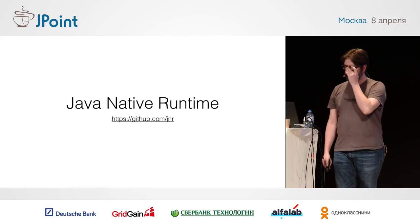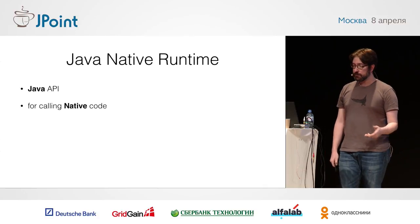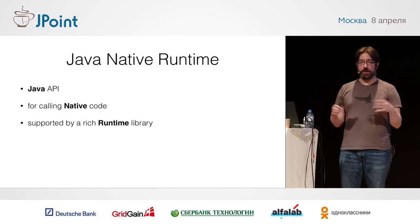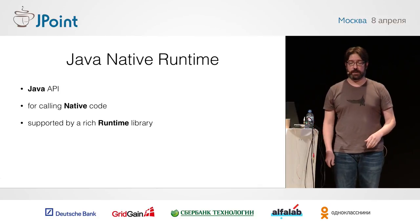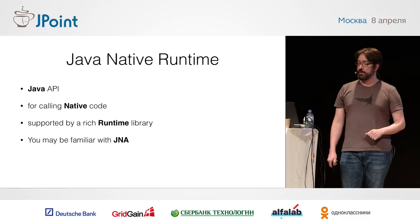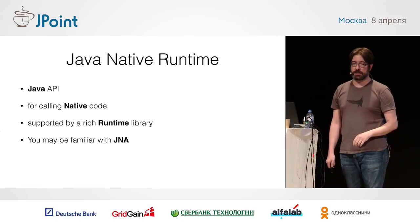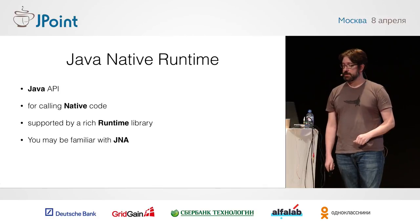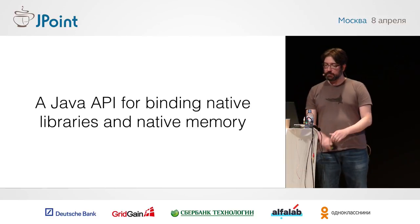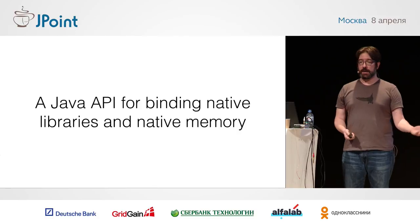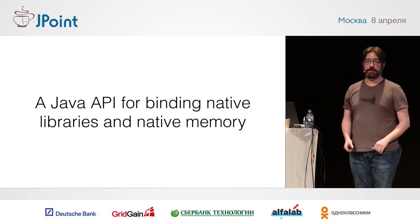The Java Native Runtime is a project we've worked on alongside JRuby to support JRuby. It's a Java API for calling out to native code. It also comes with a very rich runtime library — we've set up a whole bunch of different C calls and C libraries ahead of time for you, so you may be able to just start using them directly. You may be familiar with JNA, the Java Native Access library — JNR is very similar but with better performance and more features.